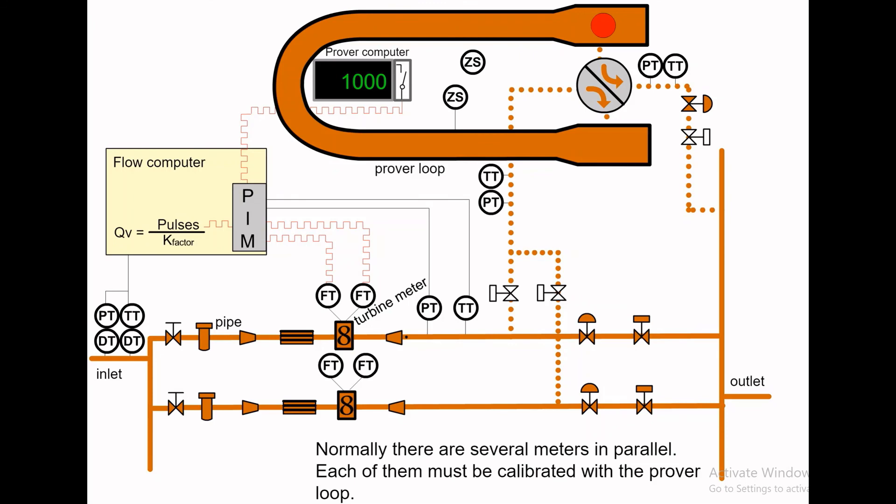Normally there are several meters in parallel. Each of them must be calibrated with the prover loop.